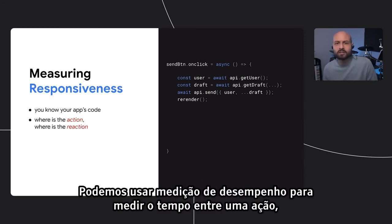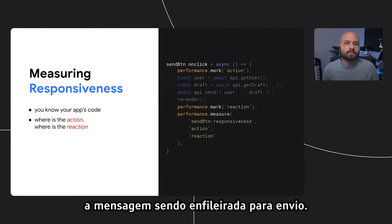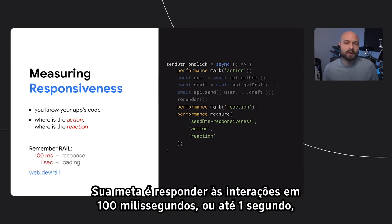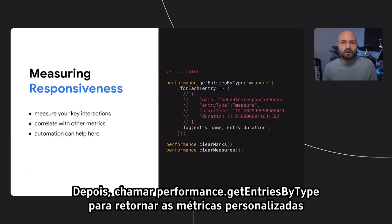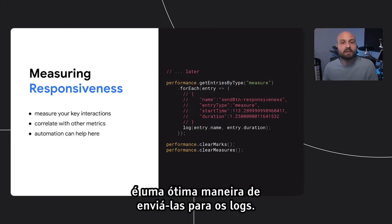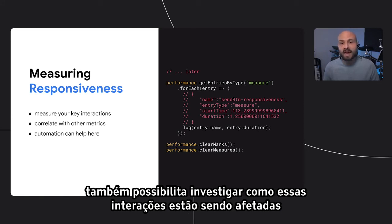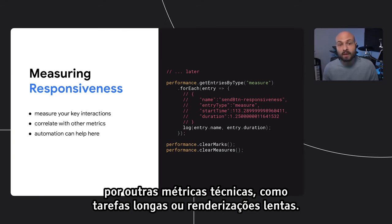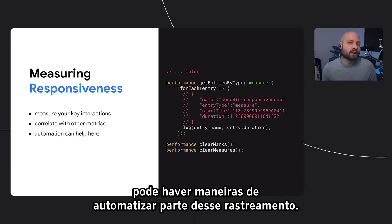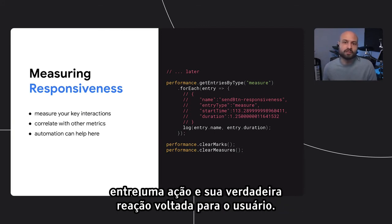We can use performance.measure to measure the time delay between an action, like the send button click, and its corresponding reaction — the message being queued for sending. Remember the RAIL guidelines: aim to respond to interactions in 100 milliseconds, or up to one second if loading things from the network. Calling performance.getEntriesByType to return your custom responsiveness metrics is a great way to siphon them over to logs. Measuring your app's important actions and reactions also makes it possible to investigate how those interactions are being affected by other technical performance metrics like long tasks or slow renders. Just make sure the measurements still represent the time between an action and its true user-facing reaction.